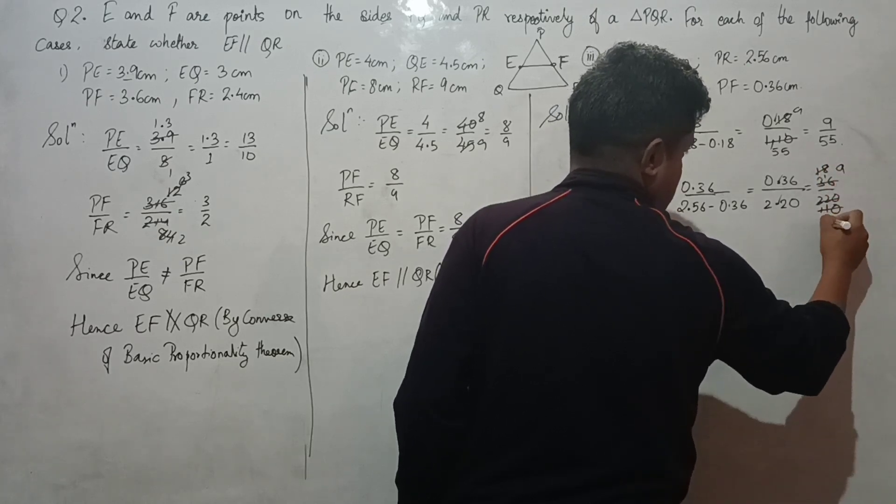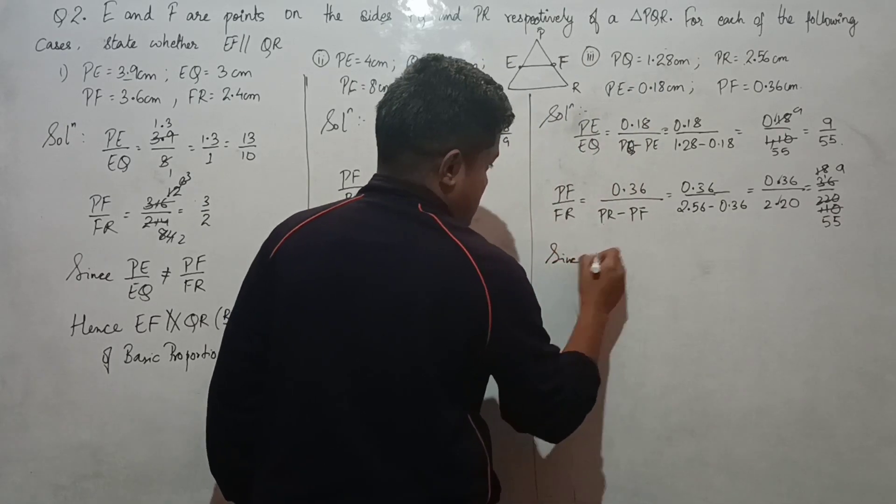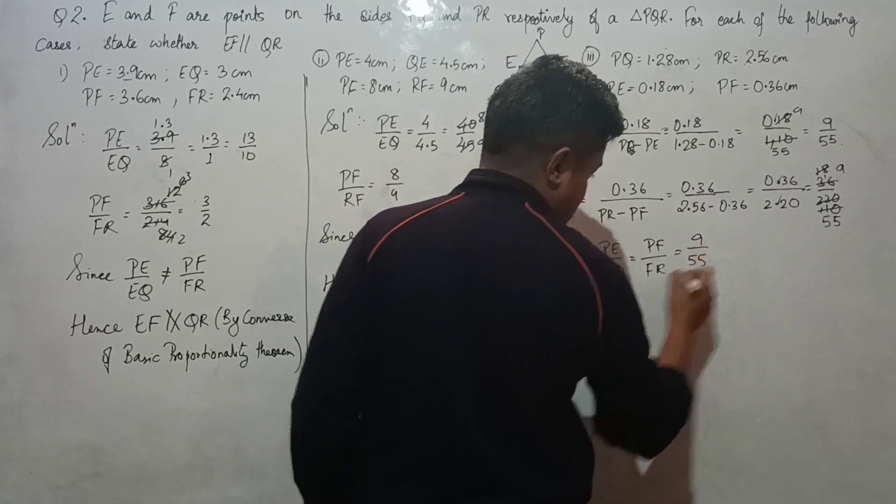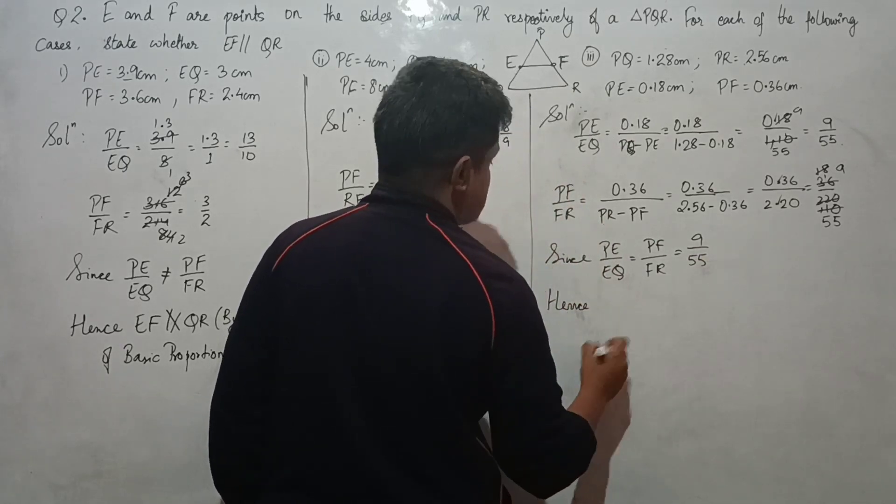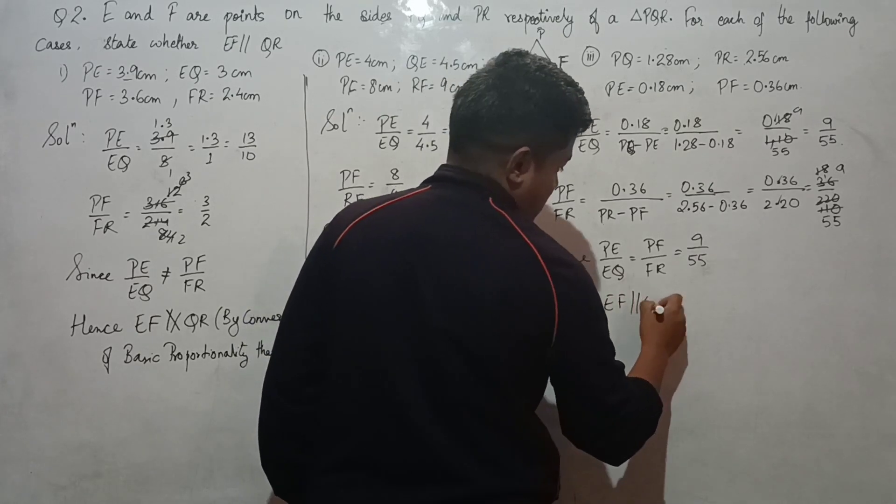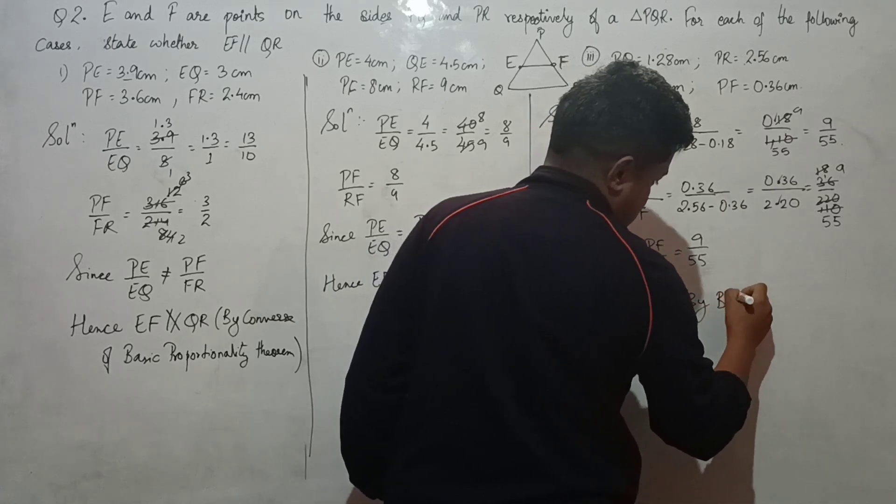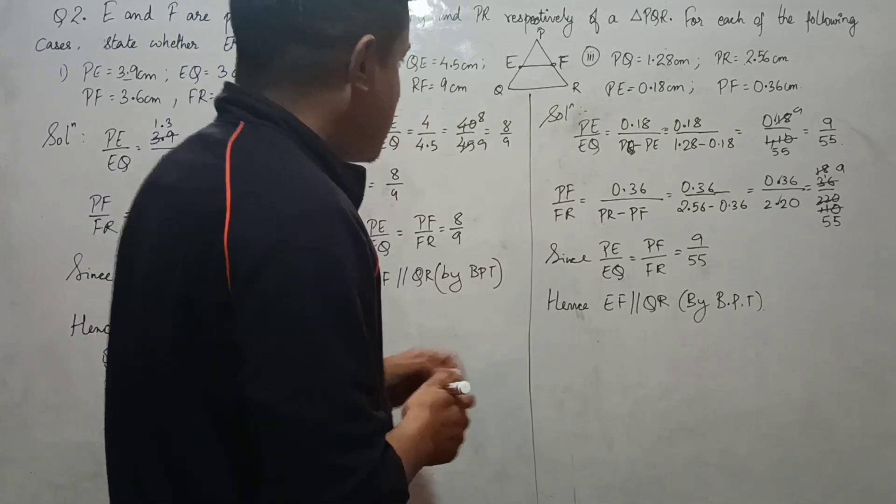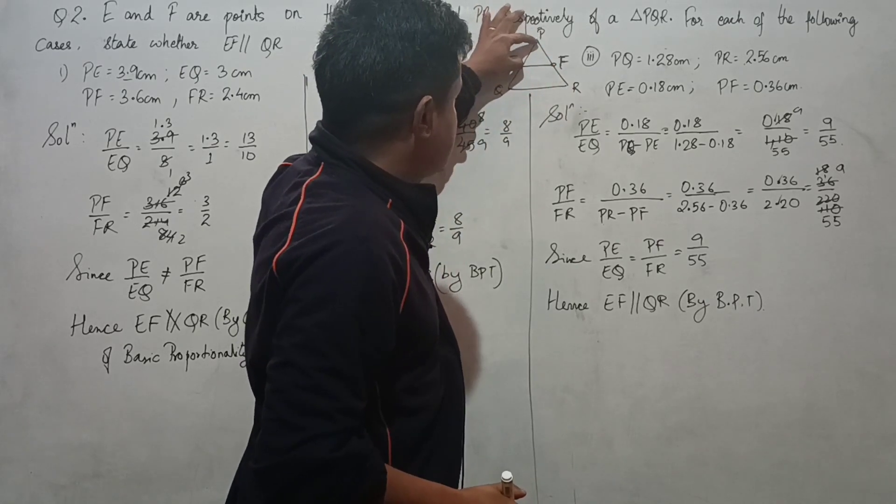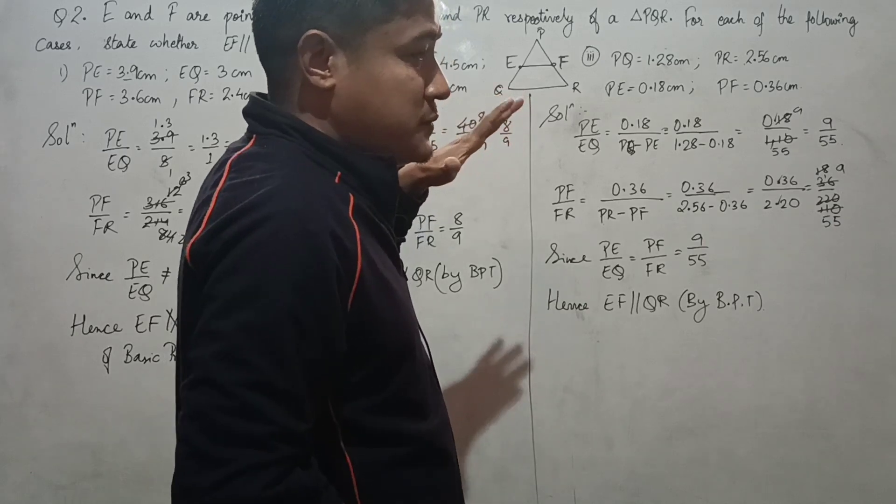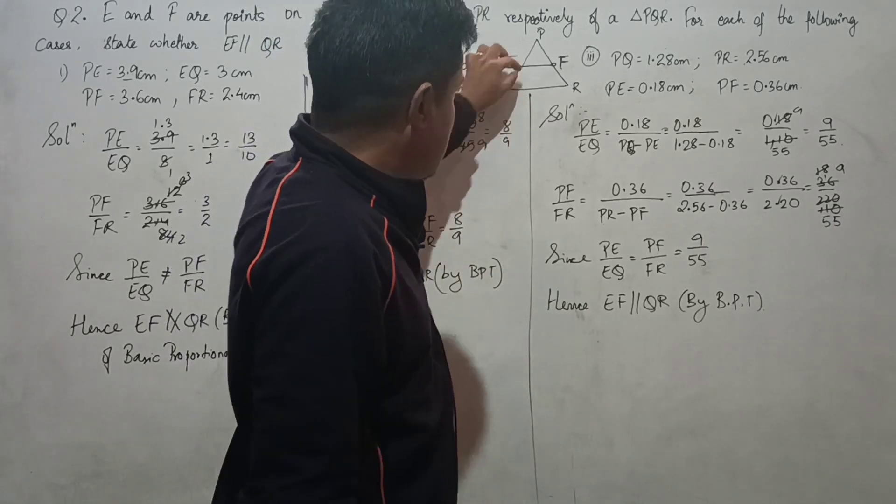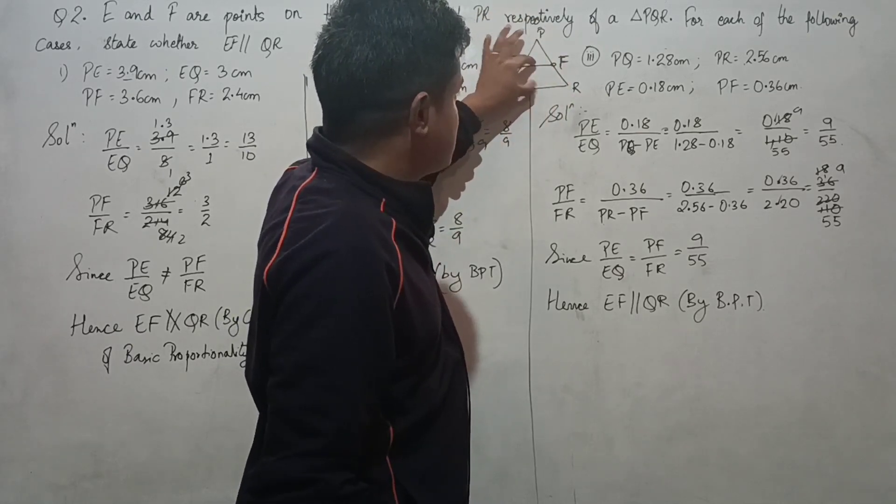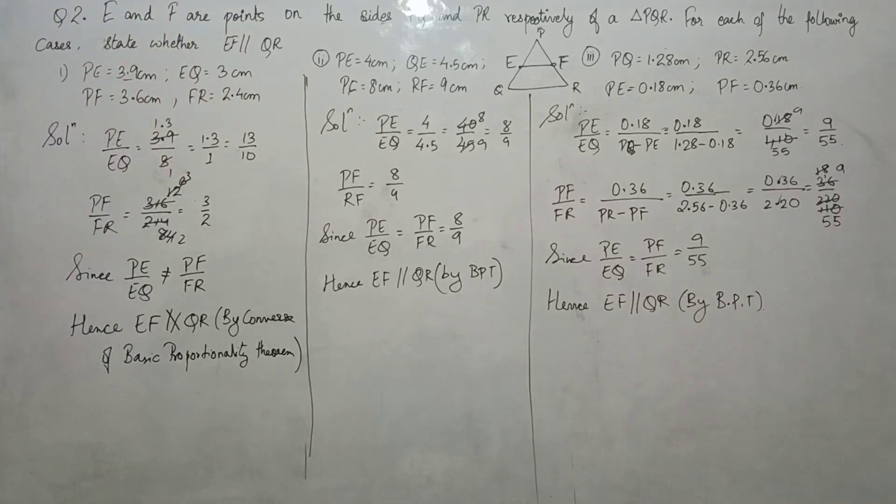Since PE/EQ equals PF/FR = 9/55, hence EF is parallel to QR by BPT. This is the application of the converse of BPT. When the sides of a triangle are in proportion, the line is parallel. With BPT and its converse, when the line is proportional, it is parallel. Thank you.